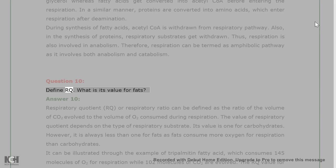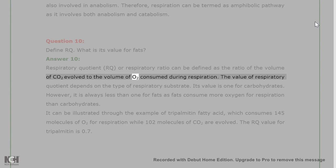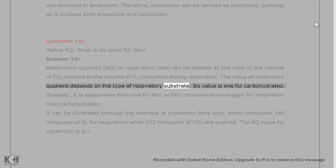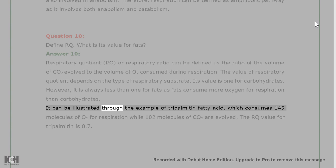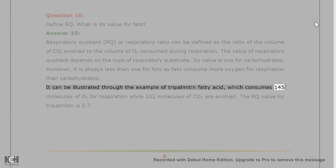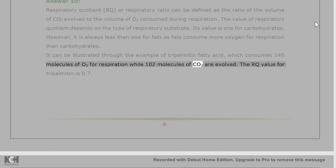Question 10: Define RQ. What is its value for fats? Answer 10: Respiratory quotient (RQ), or respiratory ratio, is defined as the ratio of the volume of CO₂ evolved to the volume of O₂ consumed during respiration. Its value depends on the type of respiratory substrate and is 1 for carbohydrates. For fats, RQ is always less than 1 because fats consume more oxygen than carbohydrates. For example, tripalmitin consumes 145 molecules of O₂ while only 102 molecules of CO₂ are evolved, giving an RQ value of 0.7.